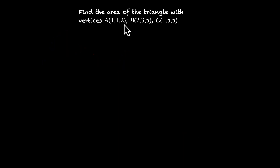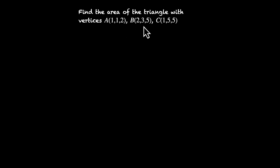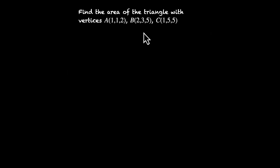So let's solve some problems. Find the area of the triangle with vertices A, B, and C, where A = (1, 1, 2), B = (2, 3, 5), and C = (1, 5, 5). Pause the video and try this on your own. To get the cross product, we need adjacent sides, so let's find vectors along two adjacent sides.